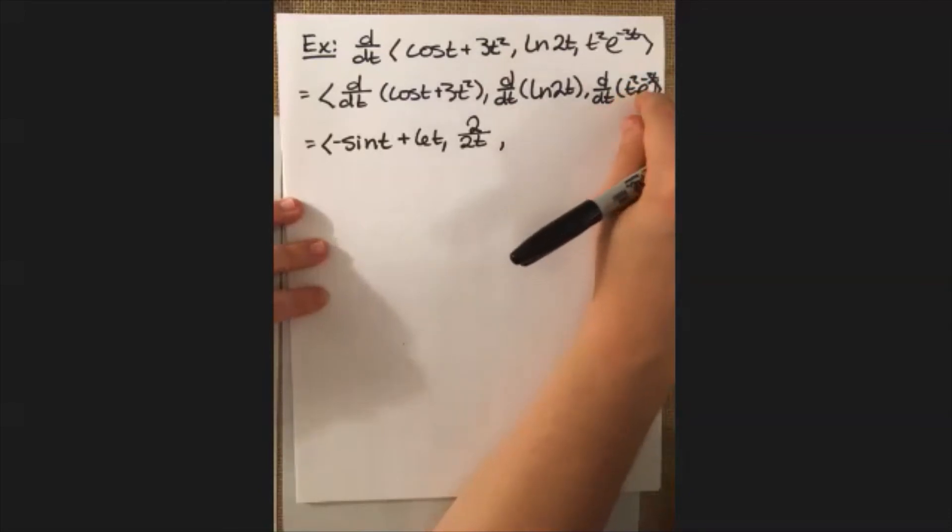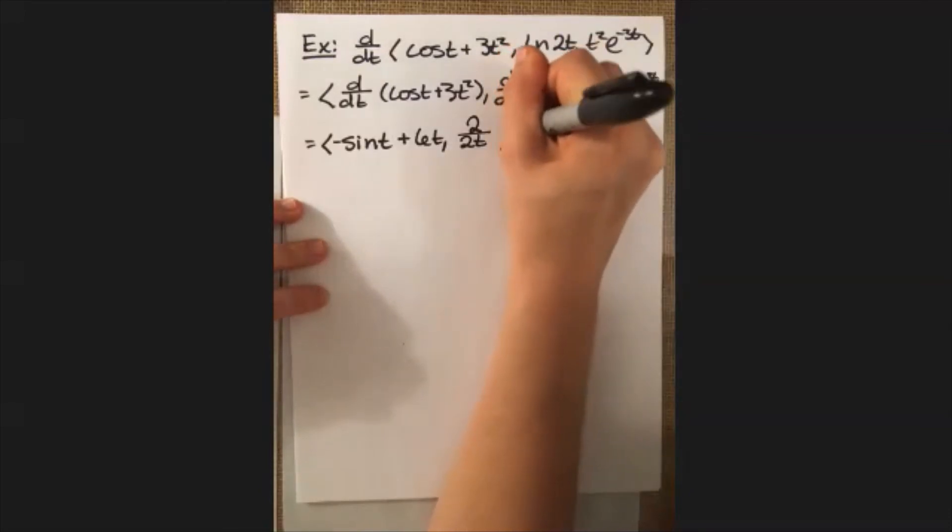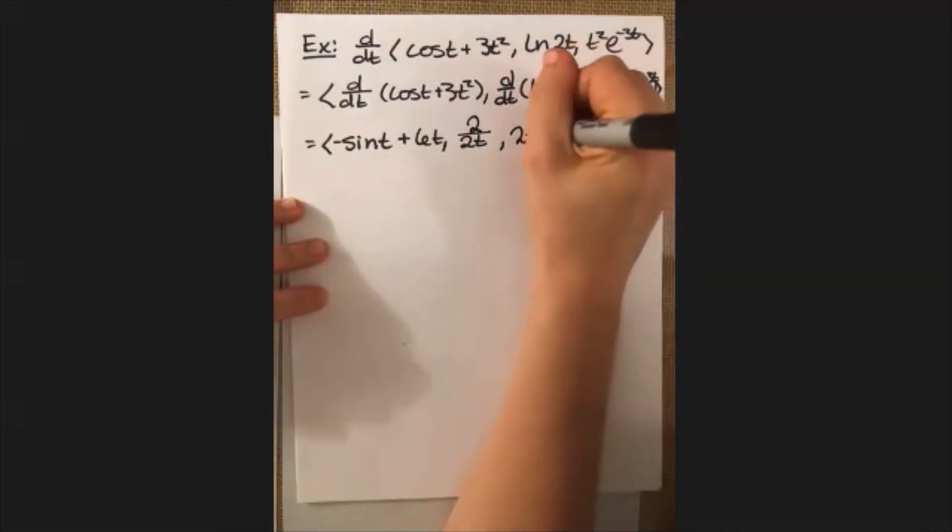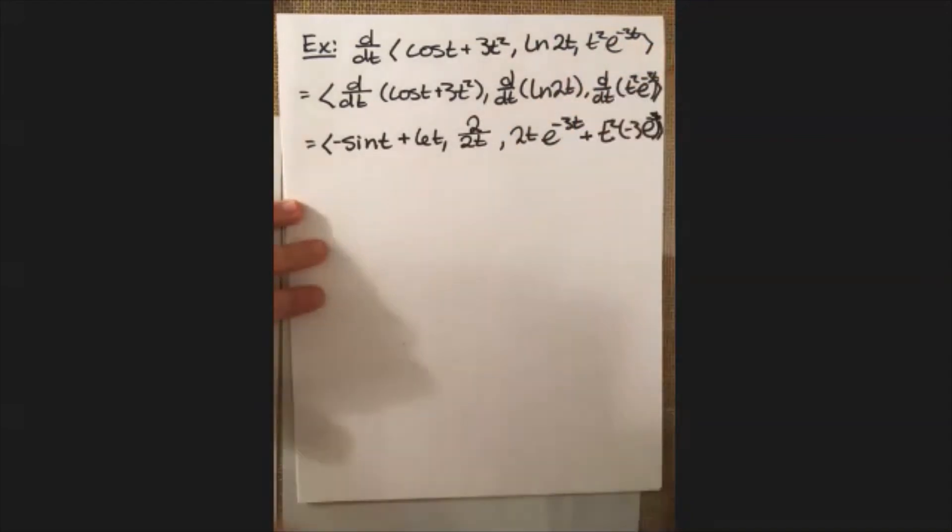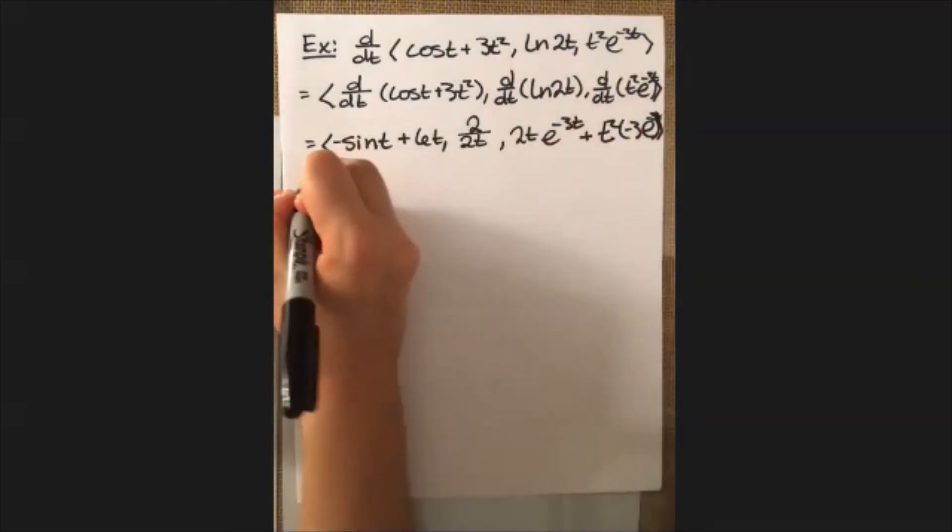So taking the derivative of t squared, I'm going to get 2t and then e to the negative 3t stays put. And then I have plus t squared stays put this time and then negative 3 e to the negative 3t. And I'm running out of space again. This is a t here.